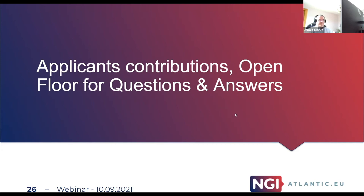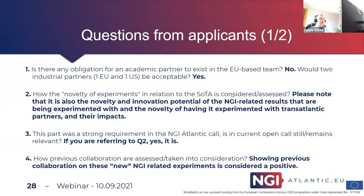A number of questions were sent in advance of the webinar. Is there any obligation for an academic partner to exist in the EU-based team? No, there isn't. Will two industrial partners — one EU, one US — be acceptable? Yes, and it has already happened. Please explain the reason you have these two industrial partners. It's absolutely fine, but please explain the experiments you're doing. It would probably also be beneficial to try to connect with one of the experimental platforms we mentioned — on the EU side, for example, Fed4FIRE+.